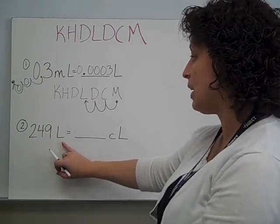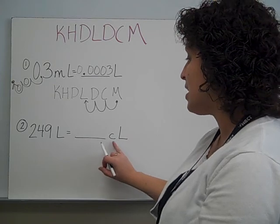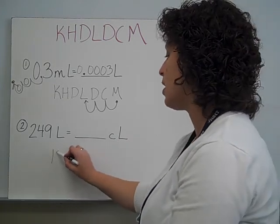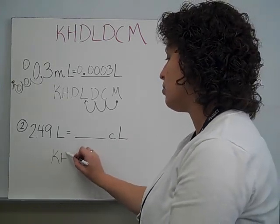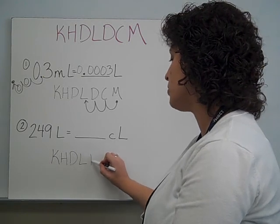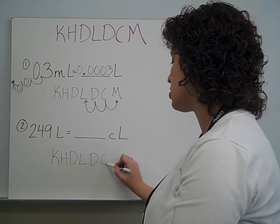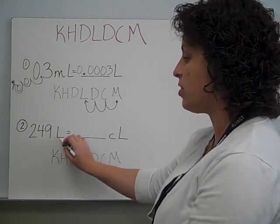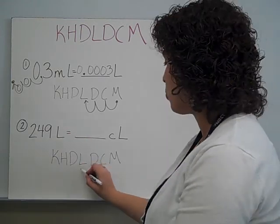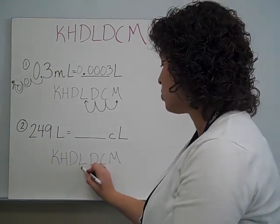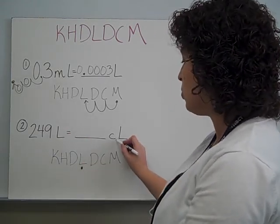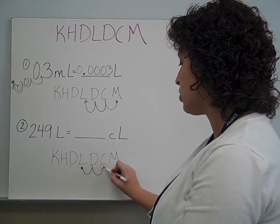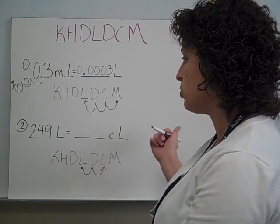One more: 249 liters equals how many centiliters? Say my phrase — King Henry's daughter loves delicious chocolate milk. The unit I was given is liters, so I put my decimal point there. I need to move to centiliters — that's the C — two moves to the right.